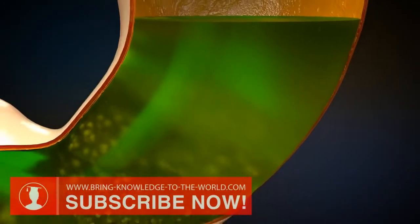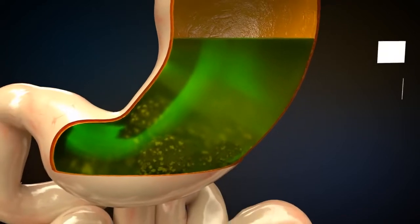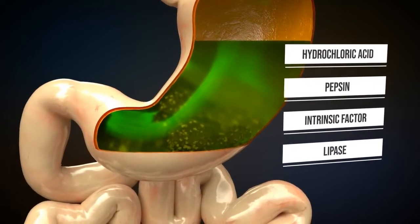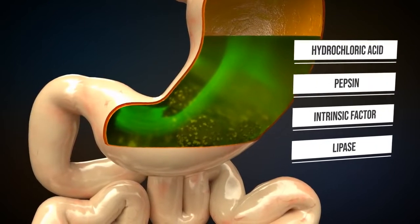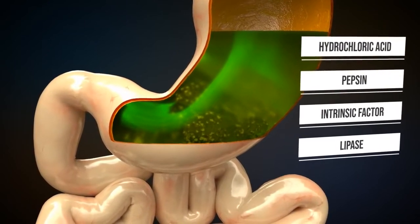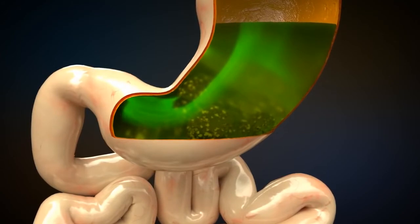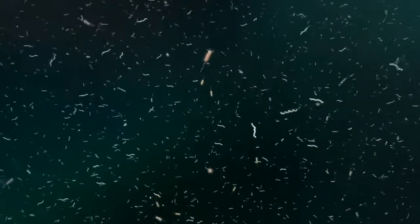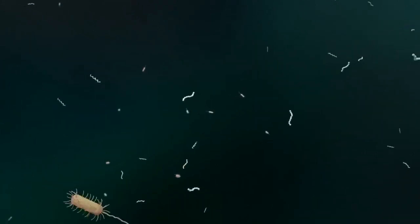It relaxes when a bolus is pushed from the esophagus into the stomach and then contracts to prevent acid and food from going back up. Gastric juice consists among other things of hydrochloric acid, the enzyme pepsin, the intrinsic factor, and lipase for the digestion of fat. In addition to nutrients, food also contains bacteria that can damage the body.